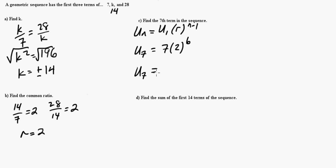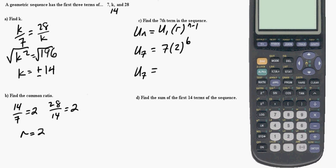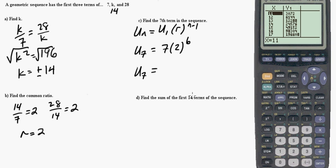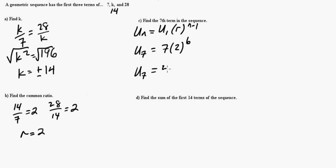So, the 7th term is going to be, well, let's break out a calculator here. And, let's move it down so you can see it. Okay, so, quit out of this, and we'll do 7 times 2 raised to the 6th power. And we get 448. So, that's our 7th term.